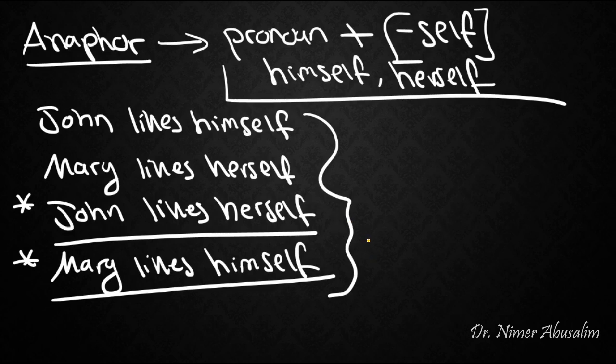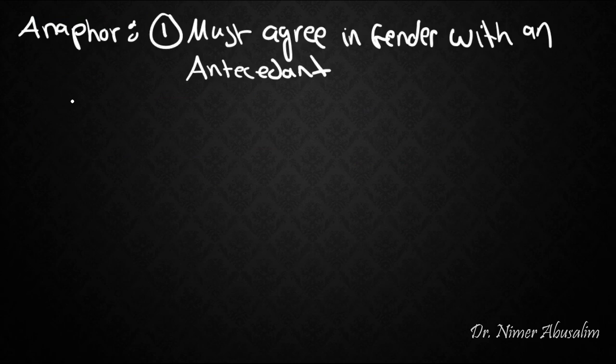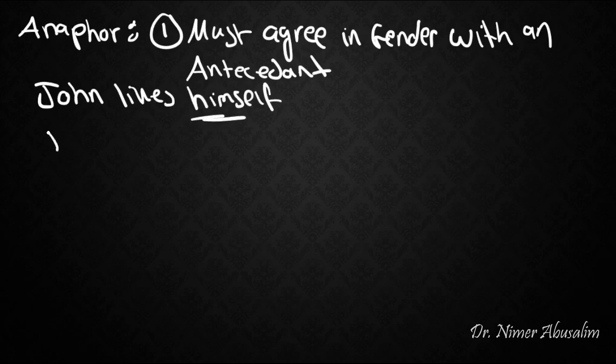The next step is to make a generalization. The generalization that we can come up with here is that the anaphor must agree in gender with an antecedent. An antecedent is the phrase or the person that the anaphor refers back to. So since John is male, himself must also be the masculine version of an anaphor. Since Mary is female, this must be the feminine version of the anaphor. So now we come up with a generalization that says an anaphor must agree in gender with an antecedent. That would explain why John likes himself is fine, but John likes herself is not.